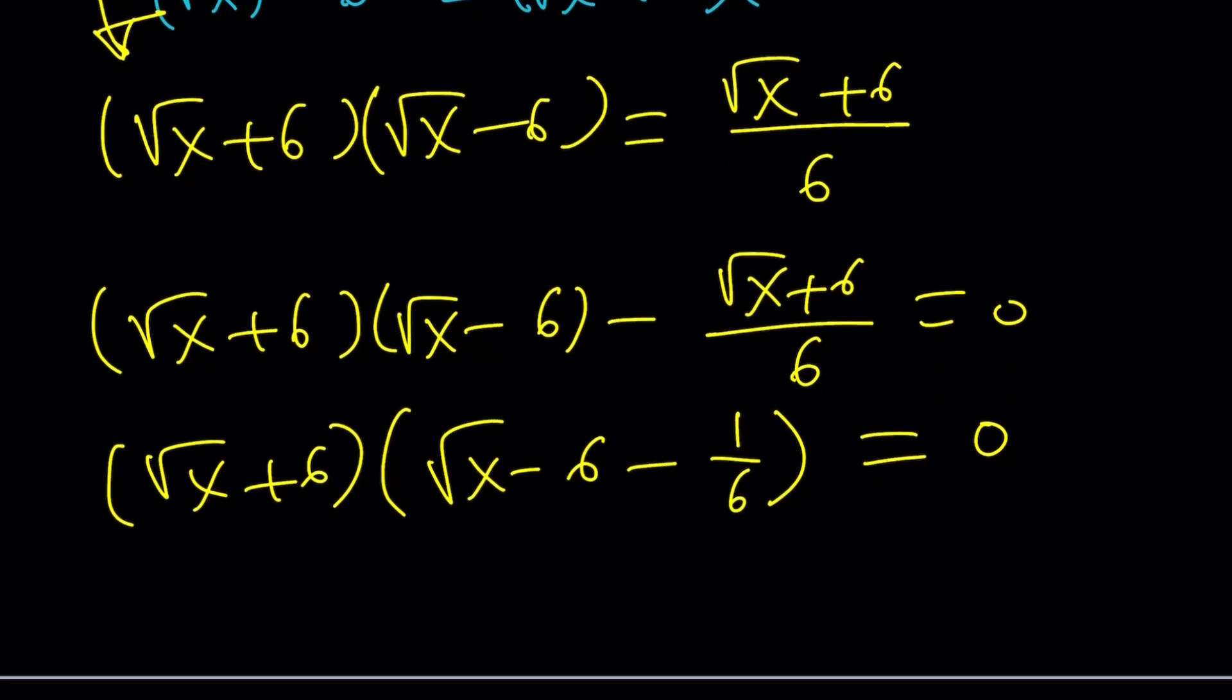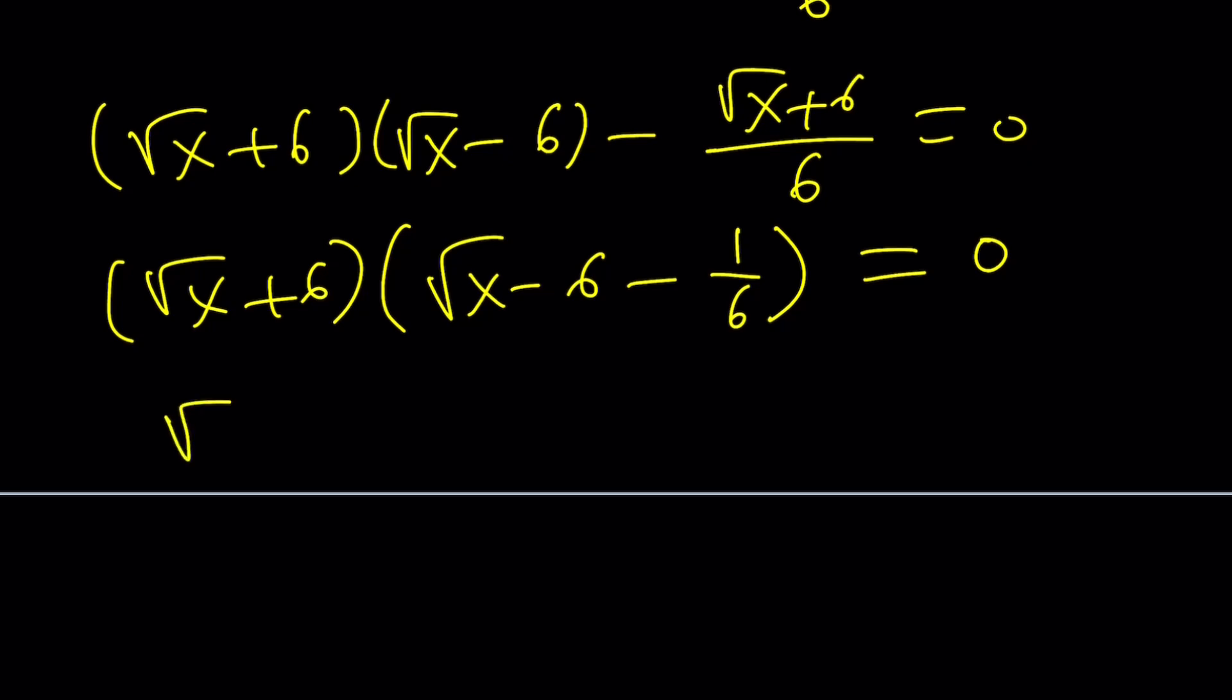Why is that so? Because square root of x cannot be negative 6. That's why, in other words, if this is equal to 0, this implies square root of x equals negative 6. But if x is a real number, its square root, obviously, is not going to be negative. Make sense? Okay. Great.